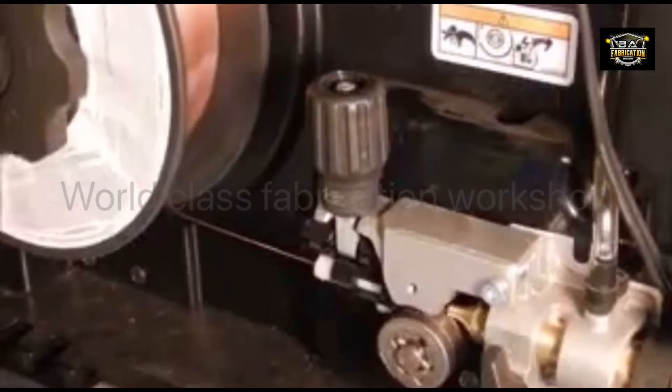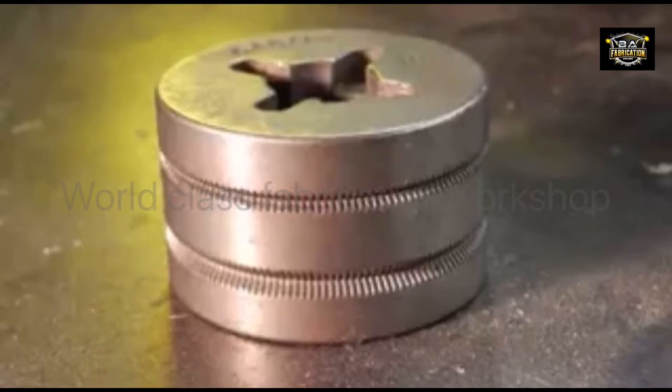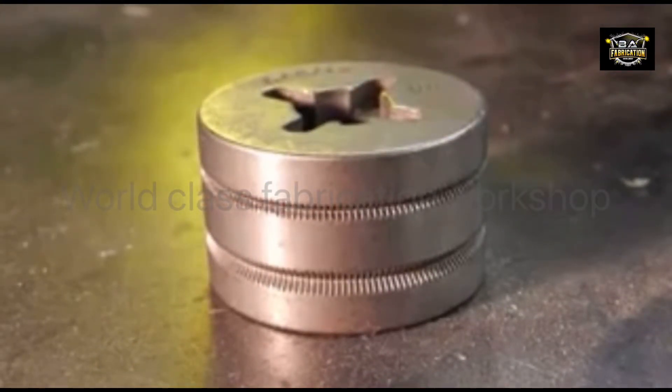In flux-core welding, the wire electrode is fed through a wire feed unit. Usually, this wire feeder requires knurled rollers that can grip the tubular wire without flattening or damaging it.